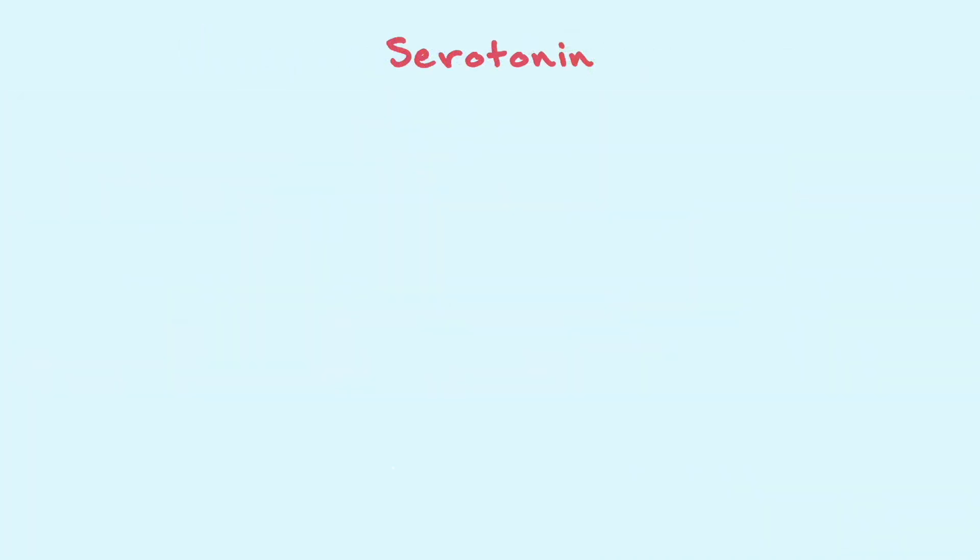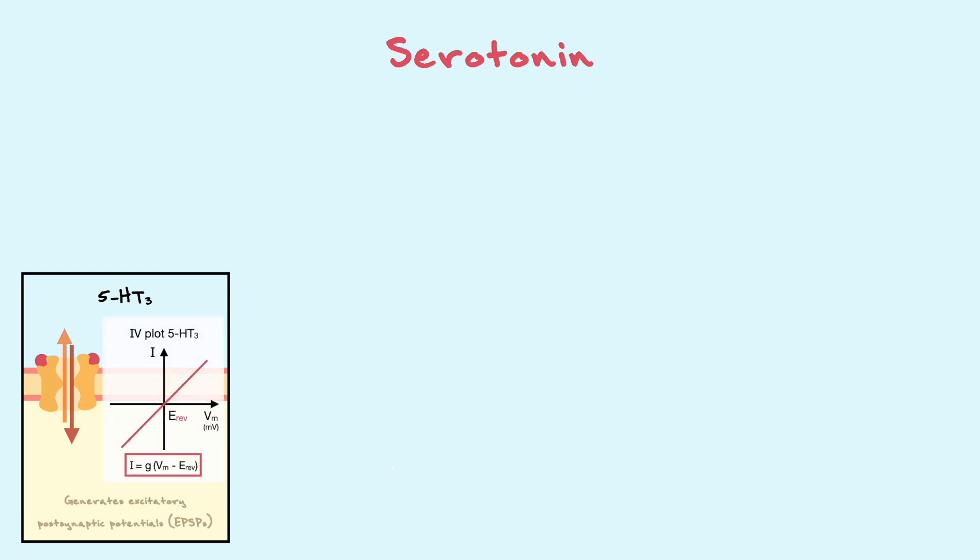Moving on to serotonin, there are seven known families of serotonin receptors that can be found in the body, and six of them are metabotropic. Out of all the biogenic amines, serotonin is the only one to be known to activate an ionotropic receptor named 5-HT3. This type of ionotropic receptor is very similar to acetylcholine receptors in the sense that it is a pentamer and that upon opening, it is permeable to cations. Hence, this receptor has a reversal potential near 0 mV and causes excitatory postsynaptic potentials, or in other words depolarizations.